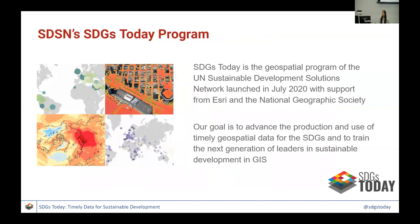SDGs Today is the geospatial arm of SDSN. It was launched in partnership with ESRI and the National Geographic Society in July of 2020. Our goal is to advance and cultivate the use of timely geospatial data for the SDGs. As I mentioned, it's the midway point, so it's very important for us to use open and timely data to monitor the SDGs.